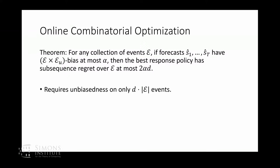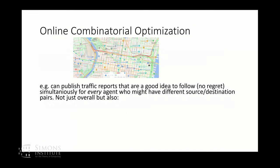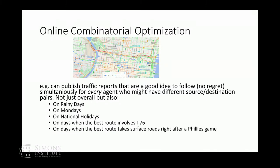Theorem: for any collection of events you care about, if the forecasts I make happen to have low bias on the Cartesian product of these events — like in the routing game, together with the events defined by your utility function showing that your best response chooses each road — then you'll actually have low sub-sequence regret in hindsight. This requires only a polynomial number of events. We can ask for this simultaneously for many different agents — not just one utility function but m players with m utility functions. For example, I could publish a single set of traffic reports that are good to follow in the no-regret sense simultaneously for a whole bunch of agents with different source-destination pairs, different utility functions, different tolerances for tolls, and they'd have no regret not just overall but on rainy days, on national holidays, or on days when the best route involves I-76.